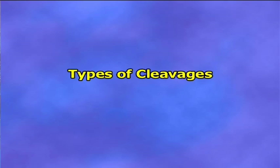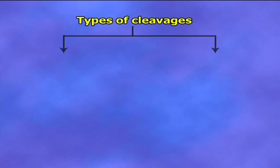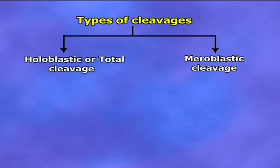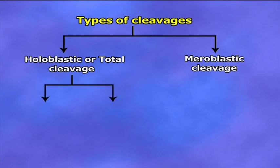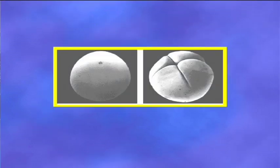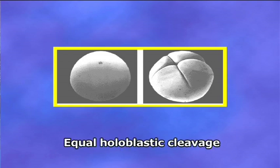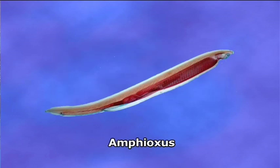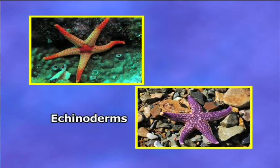Types of cleavages: two main types of cleavages are distinguished on the basis of the quantity and distribution of yolk in the egg — holoblastic cleavage and meroblastic cleavage. Holoblastic or total cleavage: in total cleavage, the whole egg is divided by each cleavage furrow. It is of two types. Number one, equal holoblastic cleavage: when the daughter blastomeres are roughly the same size, the total cleavage is known as equal holoblastic cleavage. Examples are amphioxus, tunicates, and echinoderms.